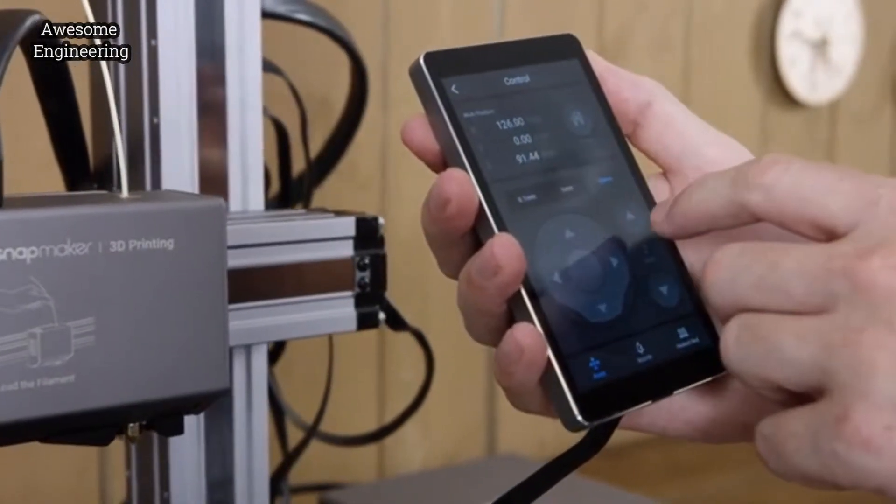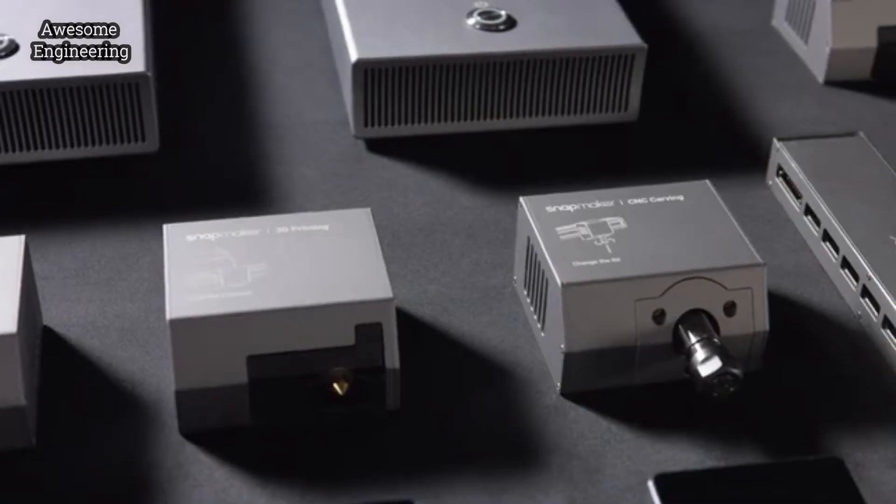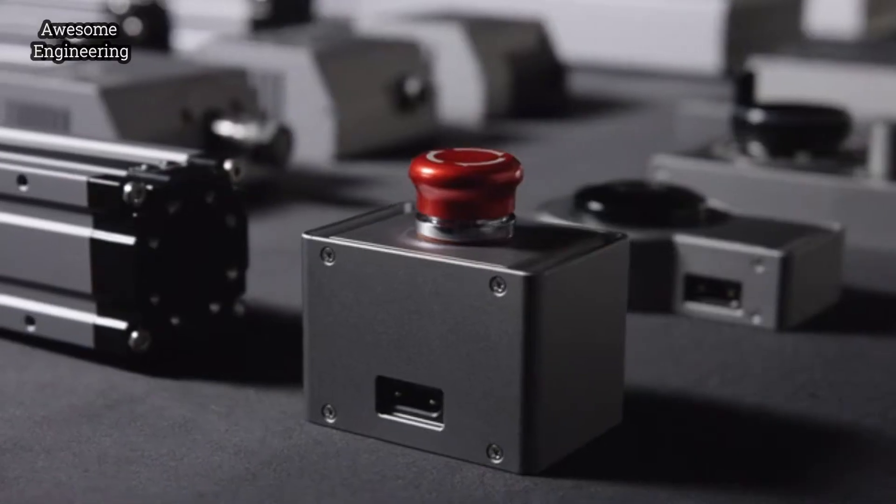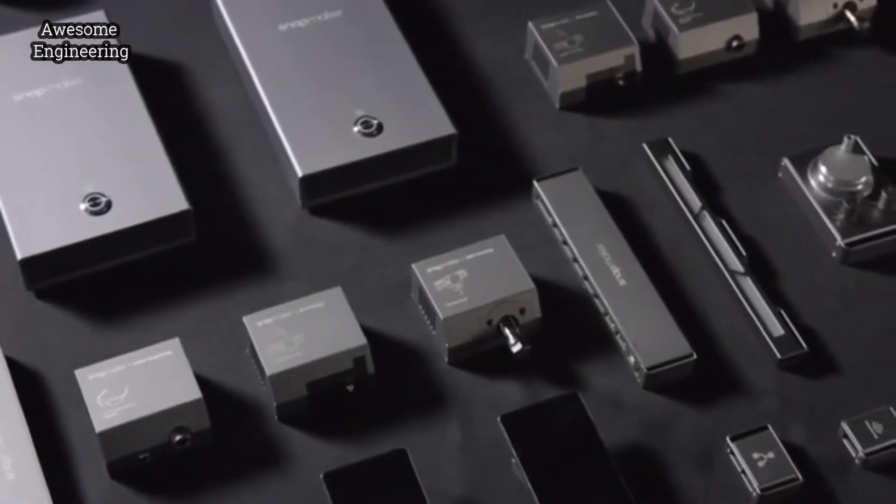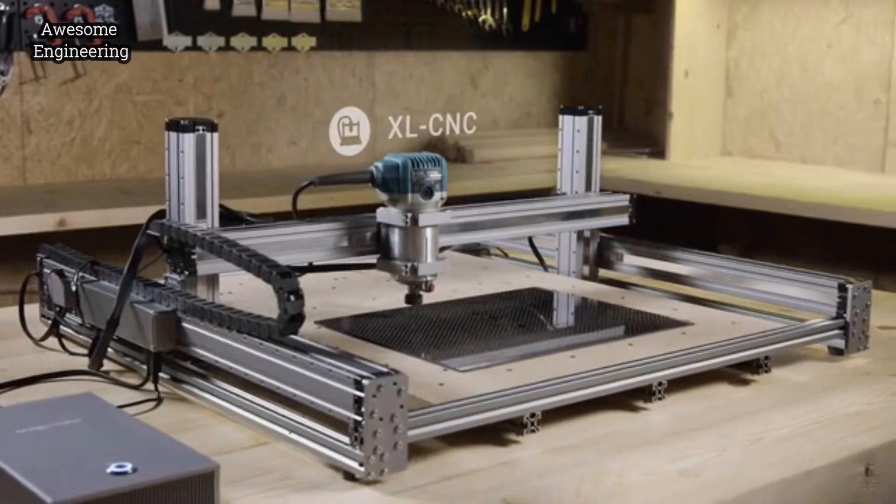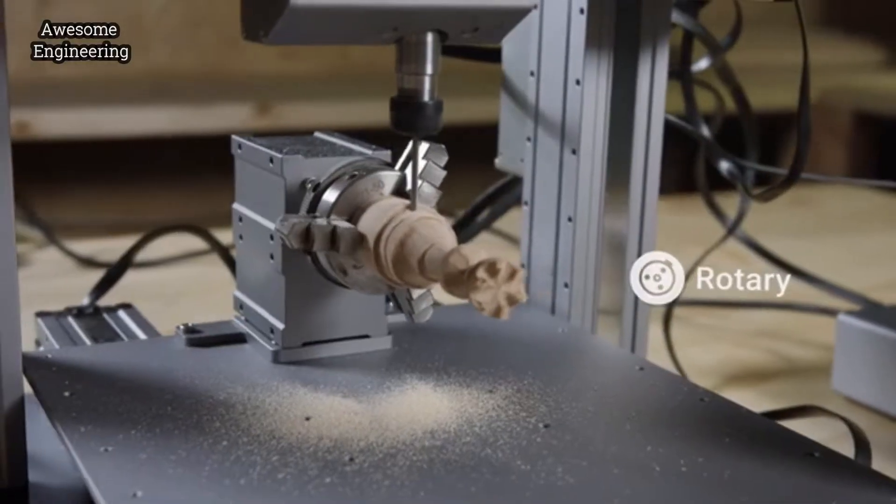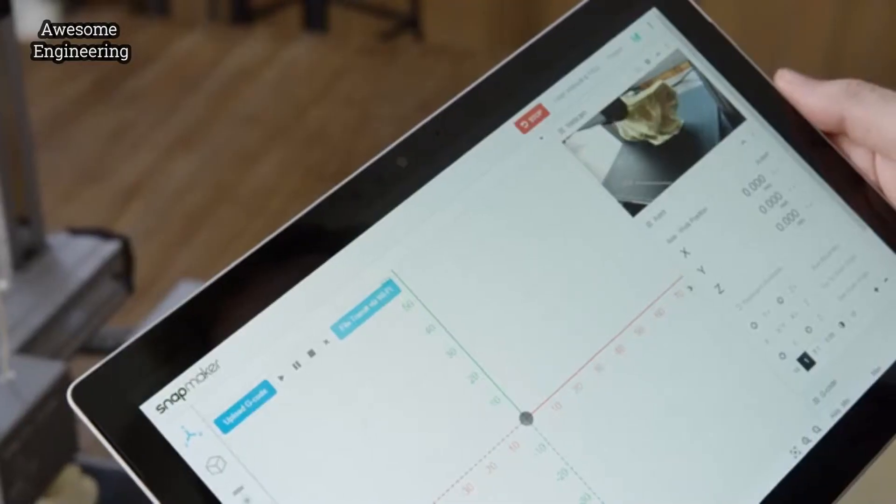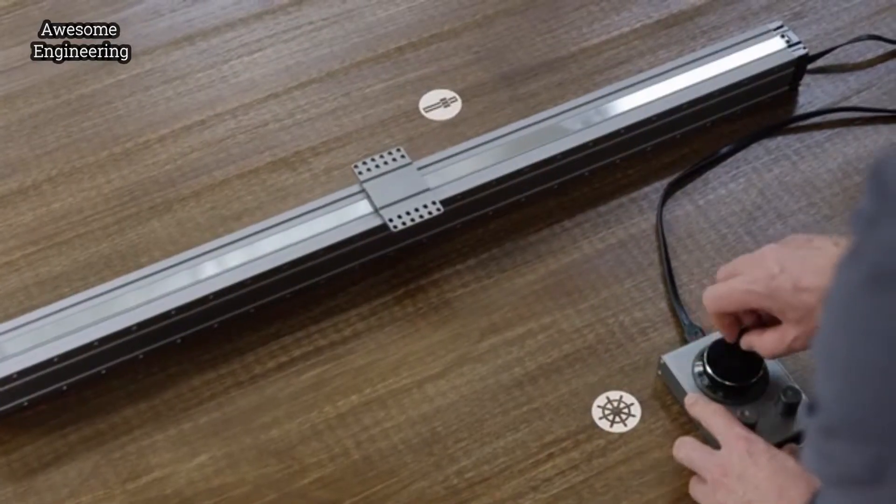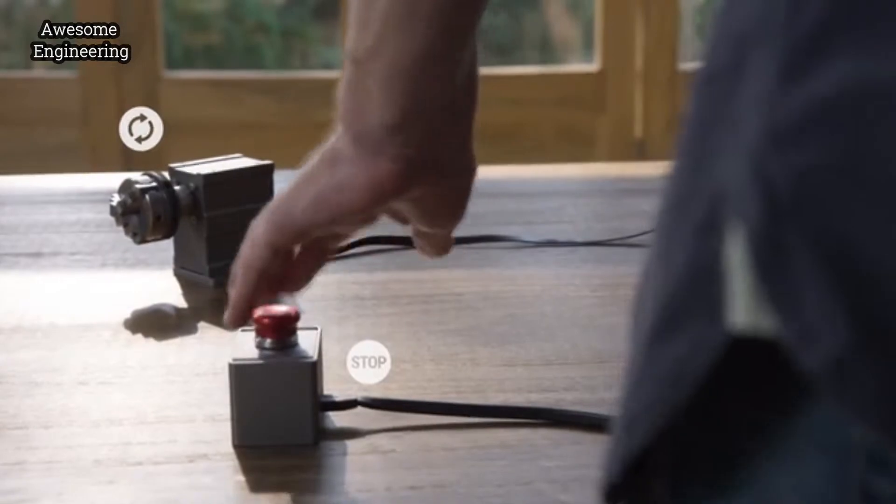Snapmaker is more than just a series of machines, it's a system of powerful modules and add-ons for creative people like you. You can make an extra-large CNC router, a huge laser engraver, and even a four-axis CNC machine. You can further enhance it by adding an IP camera, a handwheel, an emergency stop button, an enclosure and more.